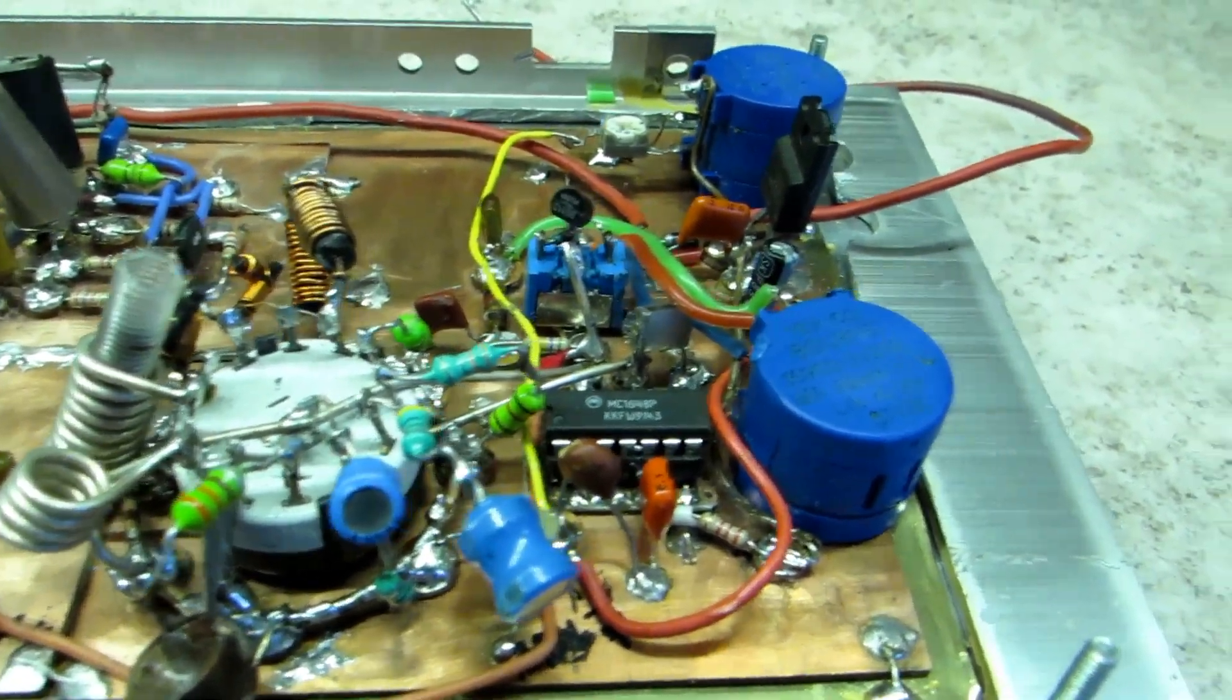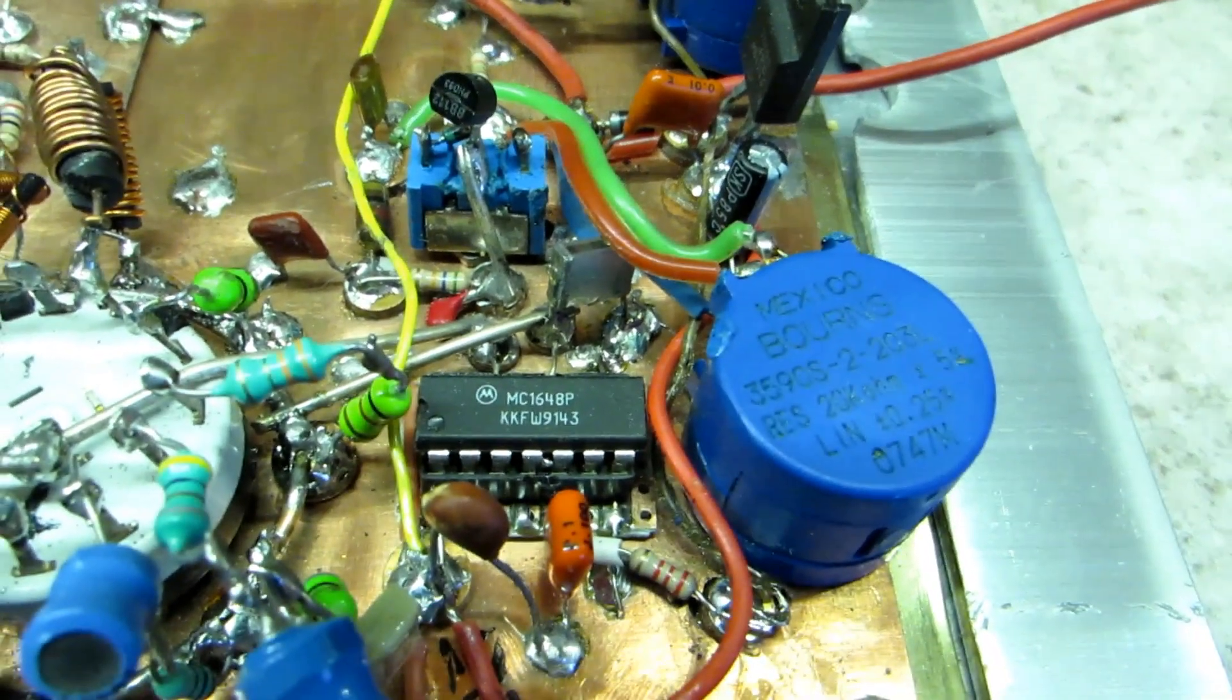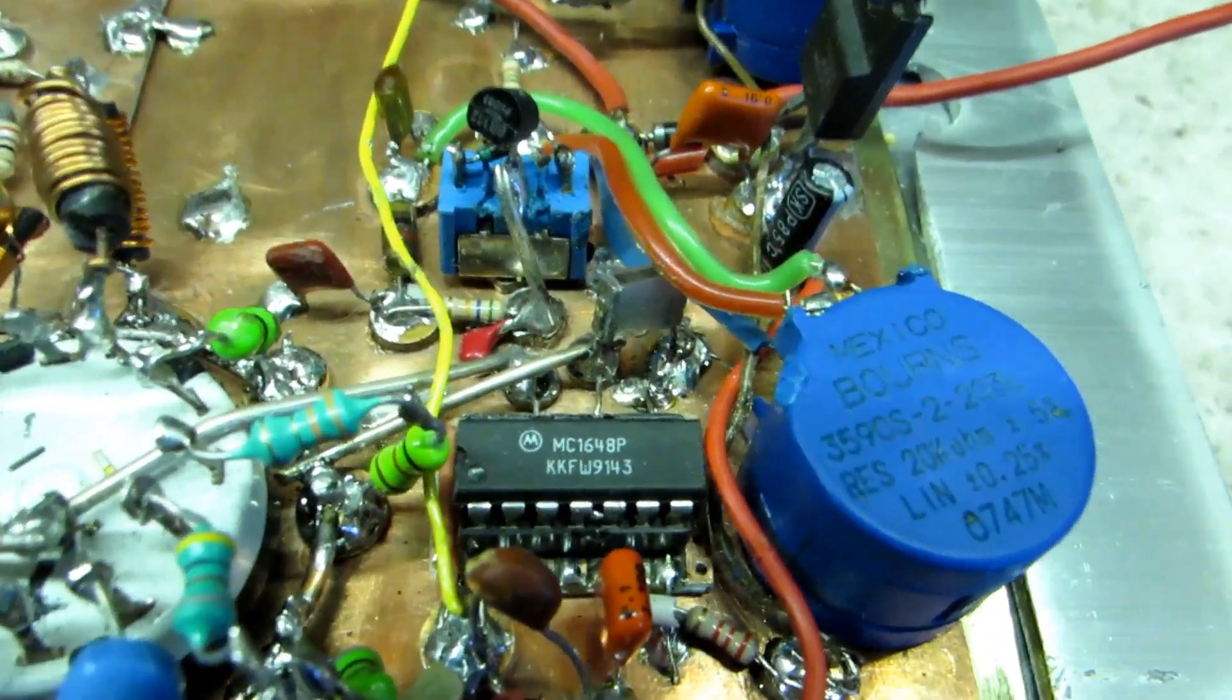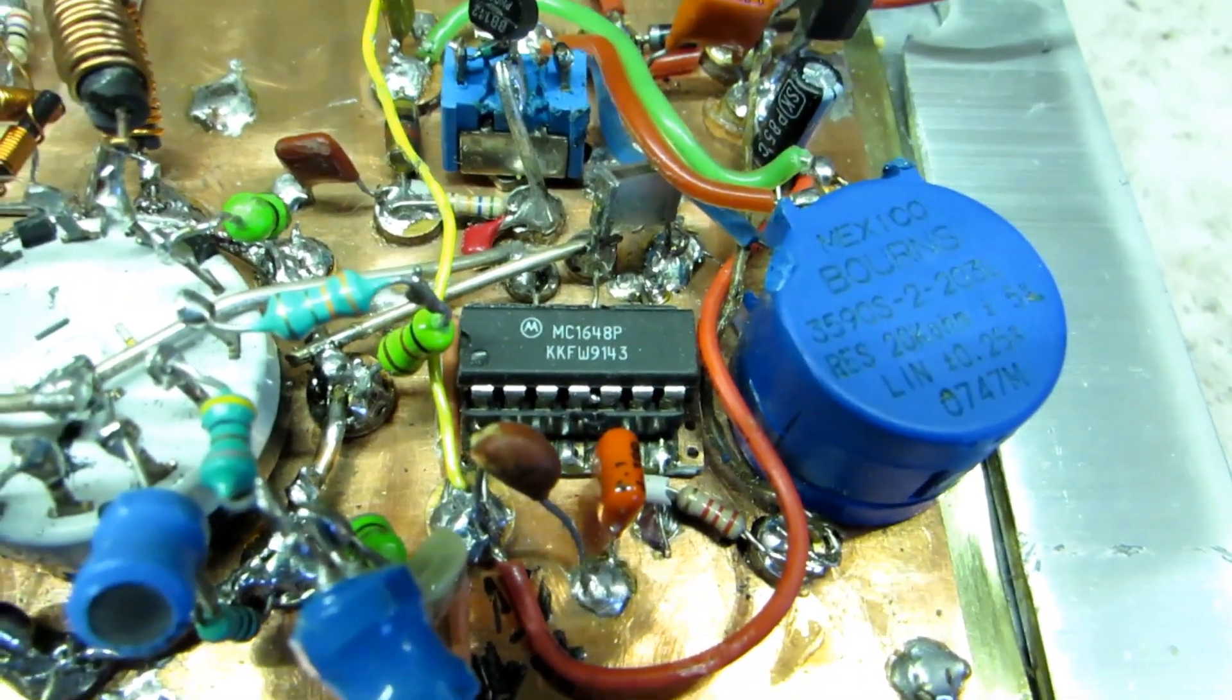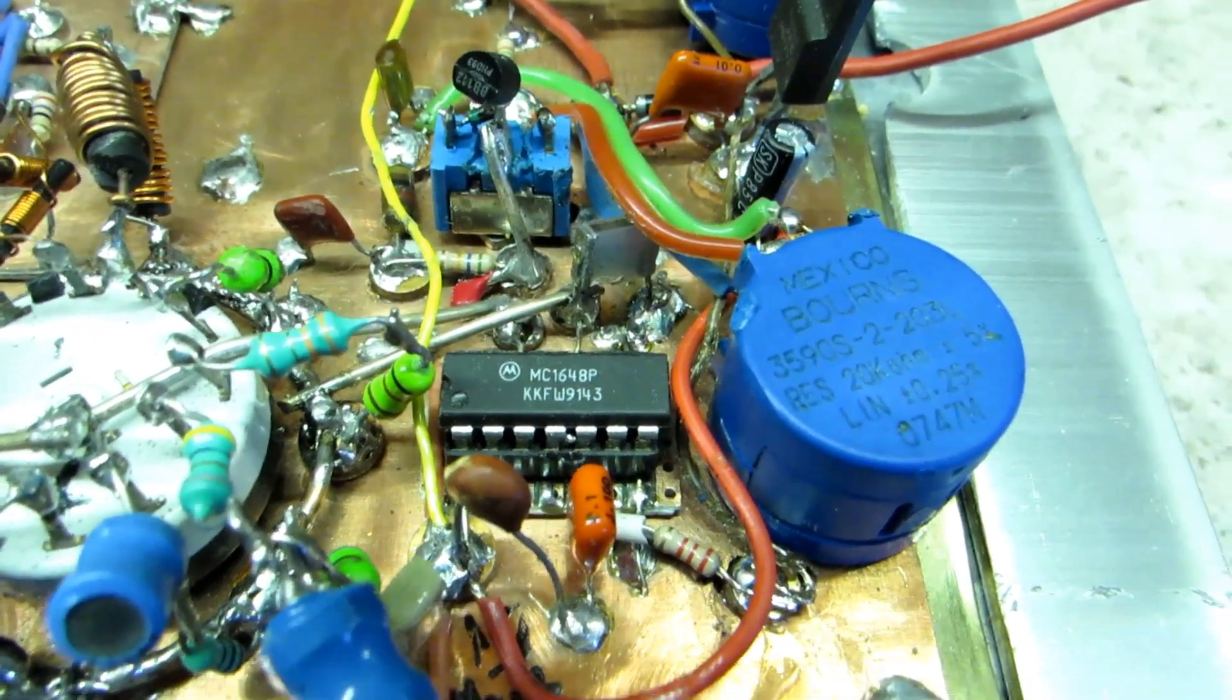I can show you the different components. This is the heart of the generator, an MC1648. It's the same as used in the Nuts and Volts magazine.